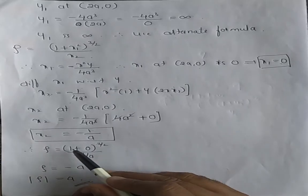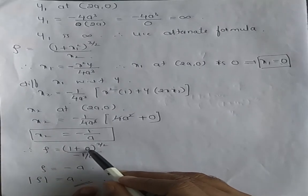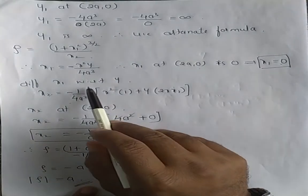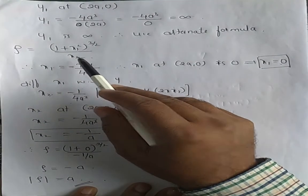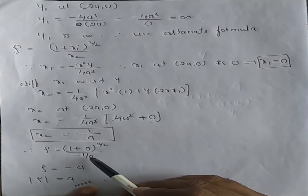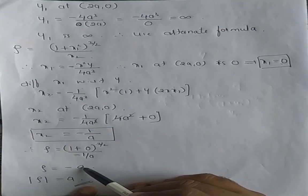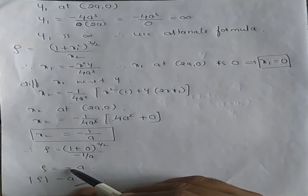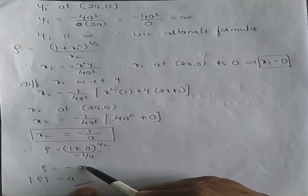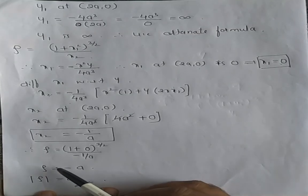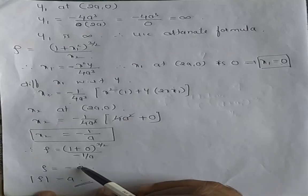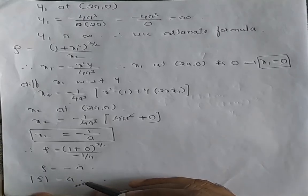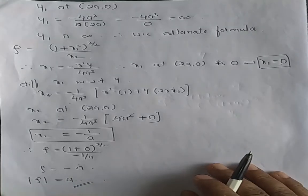The alternate radius of curvature formula gives ρ = (1 + x₁²)^(3/2) / x₂. Substituting x₁ = 0 and x₂ = −1/a: ρ = 1/(−1/a) = −a. Since radius of curvature must not be negative, we take the absolute value, giving |ρ| = a.